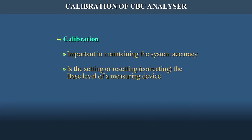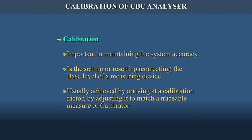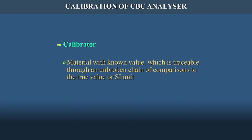Calibration is the setting or resetting that corrects the base level of a measuring device, testing system, or equipment. Calibration is achieved by arriving at a calibration factor by adjusting it to match a traceable measure or calibrator. Calibration is done using a calibrator which is a material with known value, traceable through an unbroken chain of comparisons to the true value or SI unit.